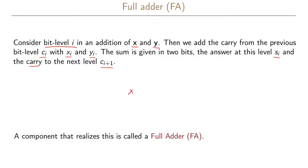To write this out: we sum xi and yi, and from the previous summation we potentially have a carry ci. When we sum these three values, we get our sum si and a carry to the next level, ci+1.